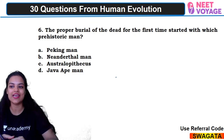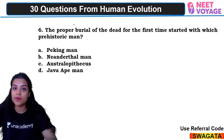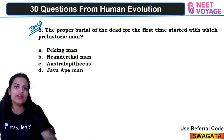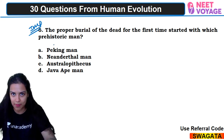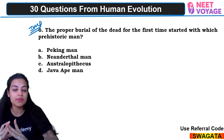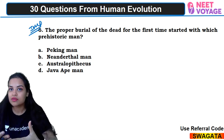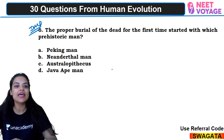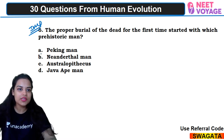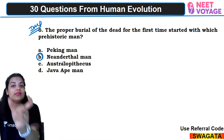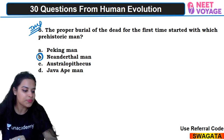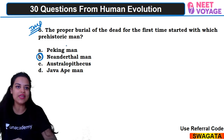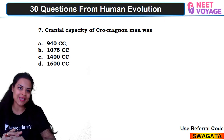Sixth question: the proper burial of dead for the first time started with which prehistoric man? This is an important question that has been asked before. The answer is that Neanderthal man was the first to bury their dead relatives and companions. So B would be the right answer — this was a special characteristic feature of Neanderthal man.